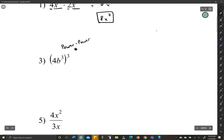Now there's a few things here. So let's take a look. What we can do is we're going to actually distribute that power to both things. So it's going to be 4 to the third times b to the 3 times 3 is 9. So we're multiplying that there.